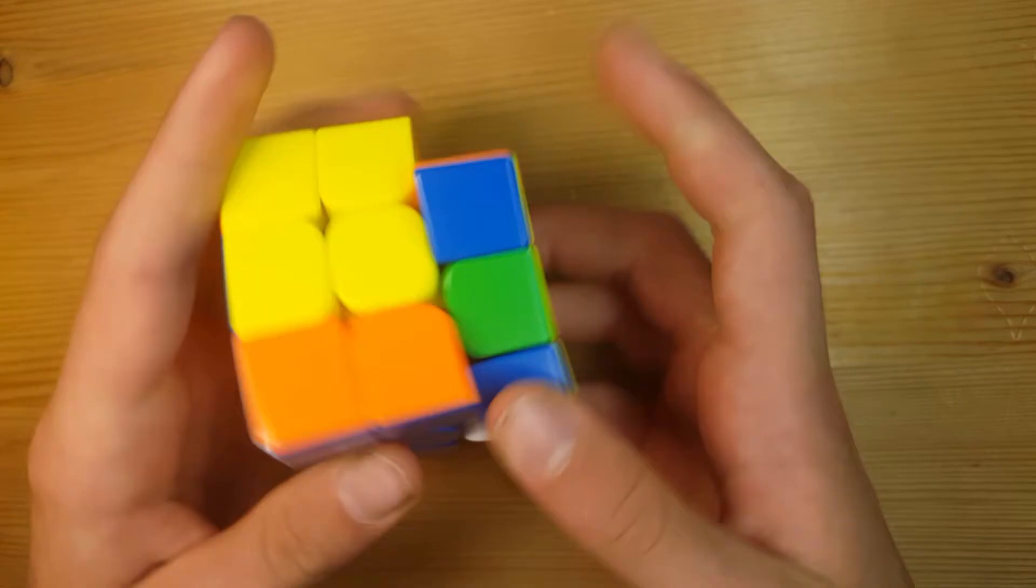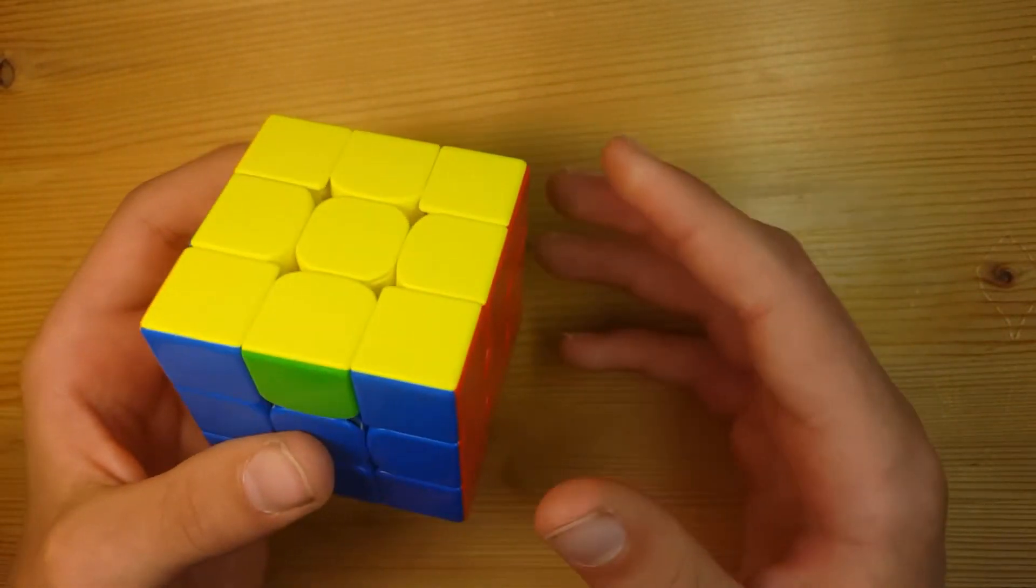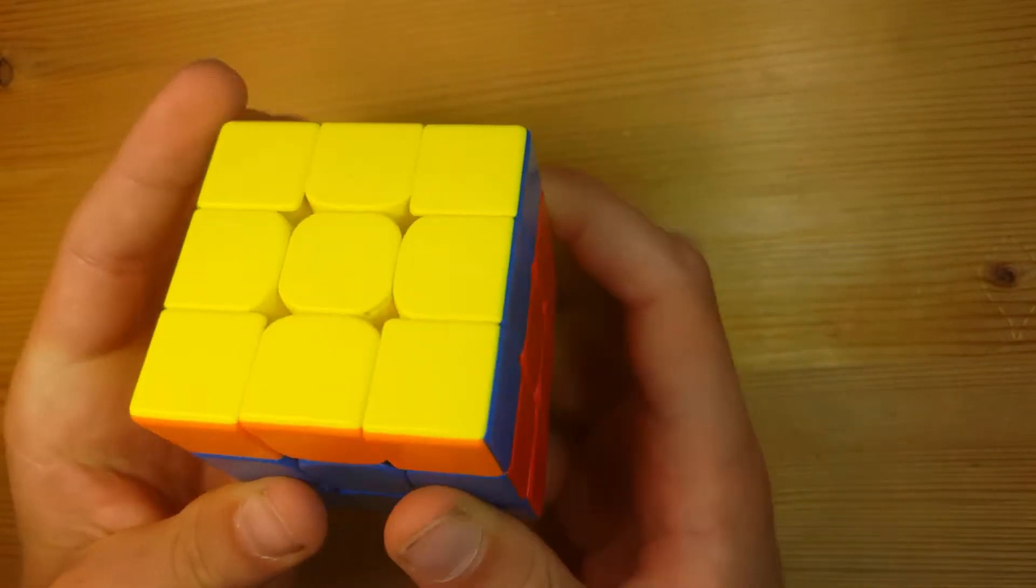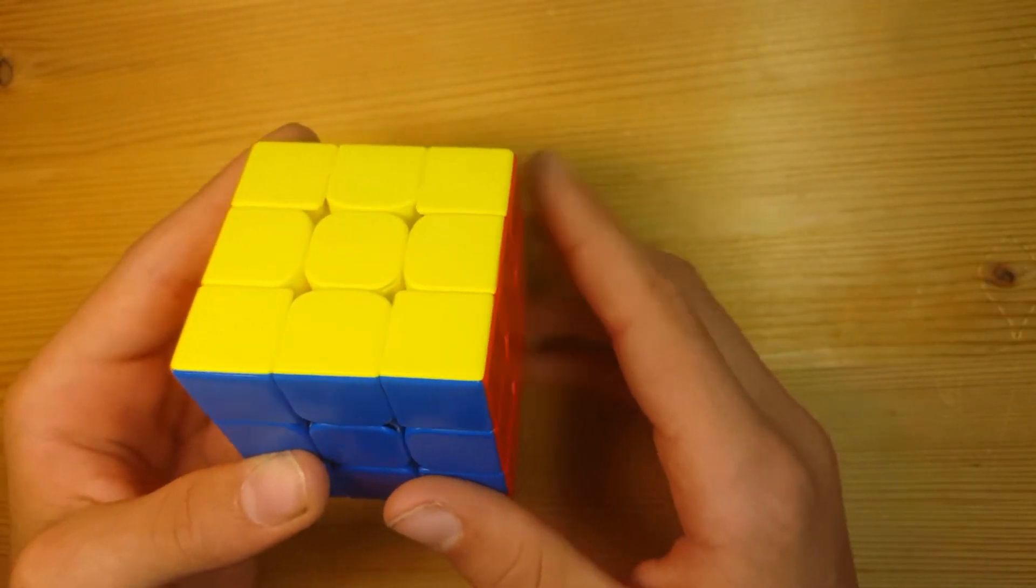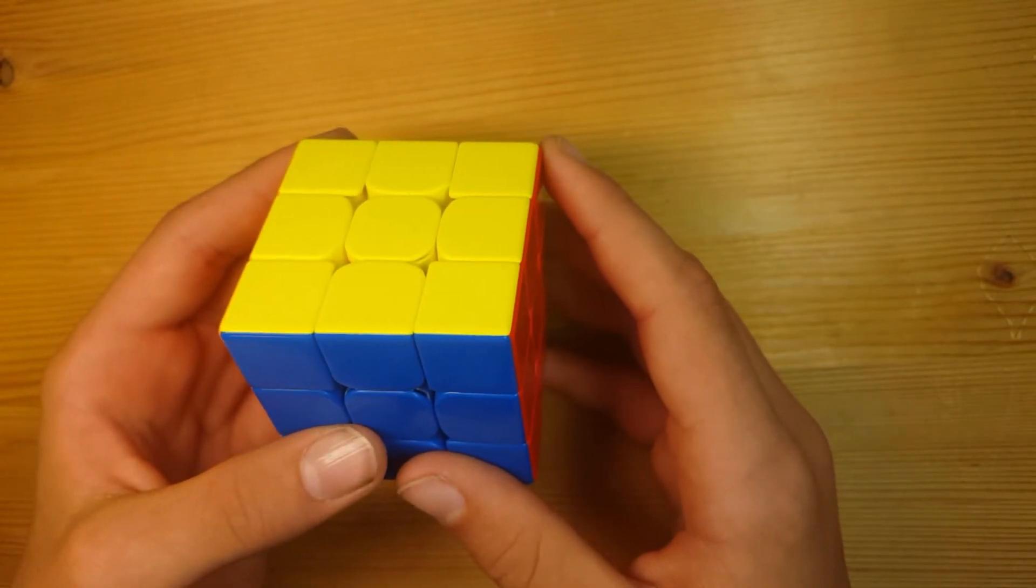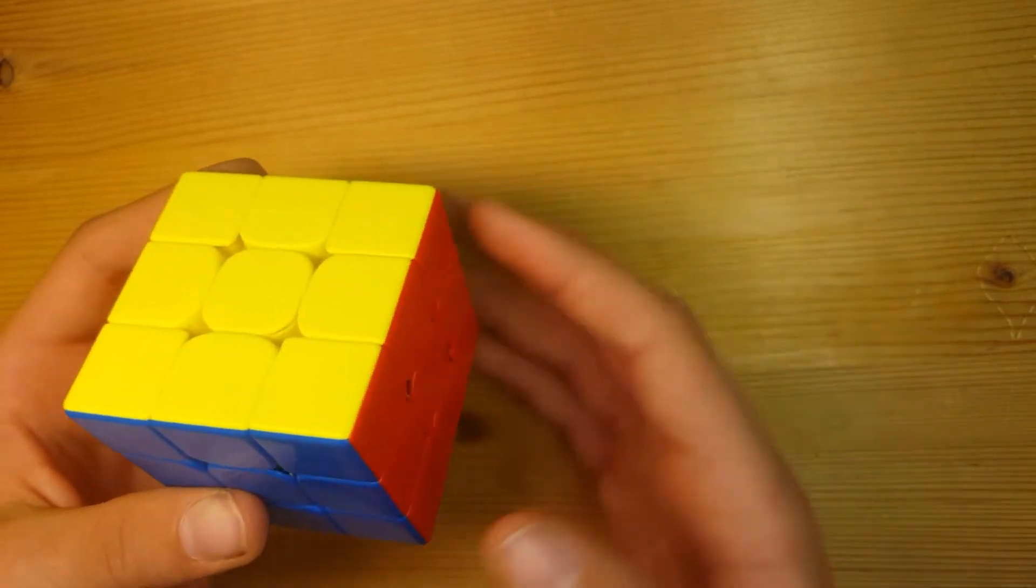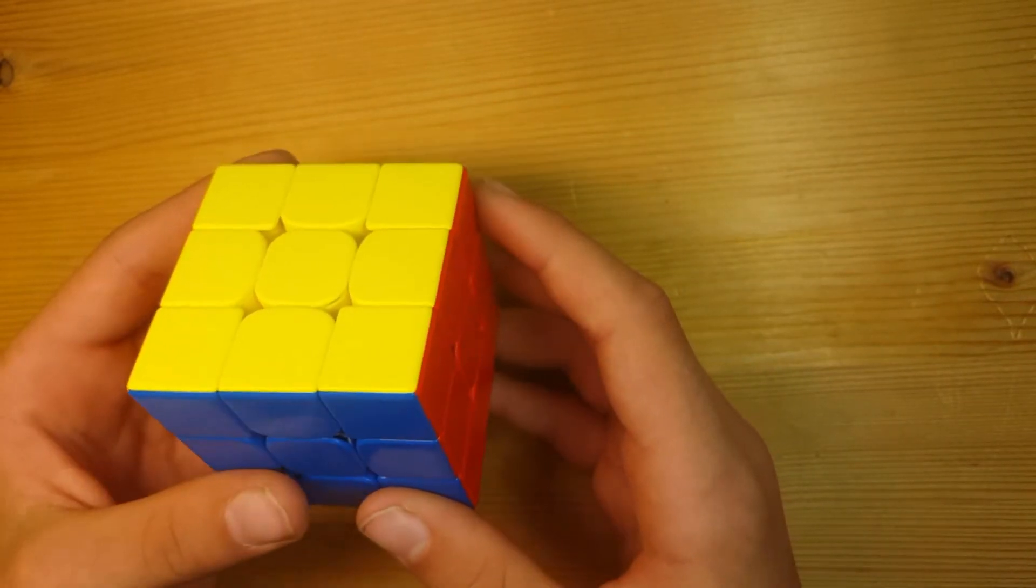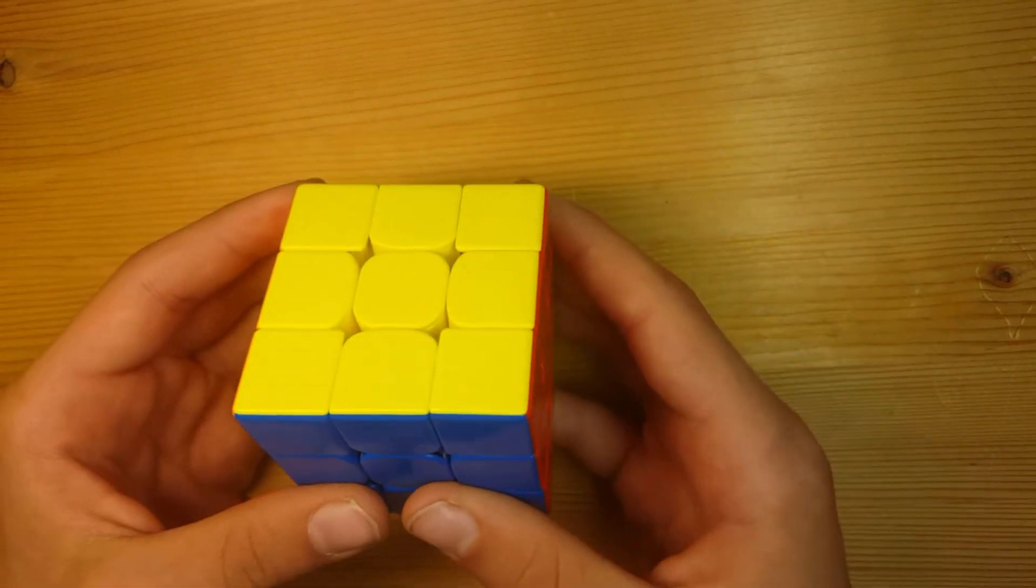The first of the two algorithms solve the corners. The second algorithm solves the edges. There are two algorithms you need to know for the corners and four algorithms you need to know for the edges. So that is six algorithms you need to know in total. You only need to learn four more if you already know beginner PLL because two of the algorithms are used in beginner PLL. So let's get into the algorithms.